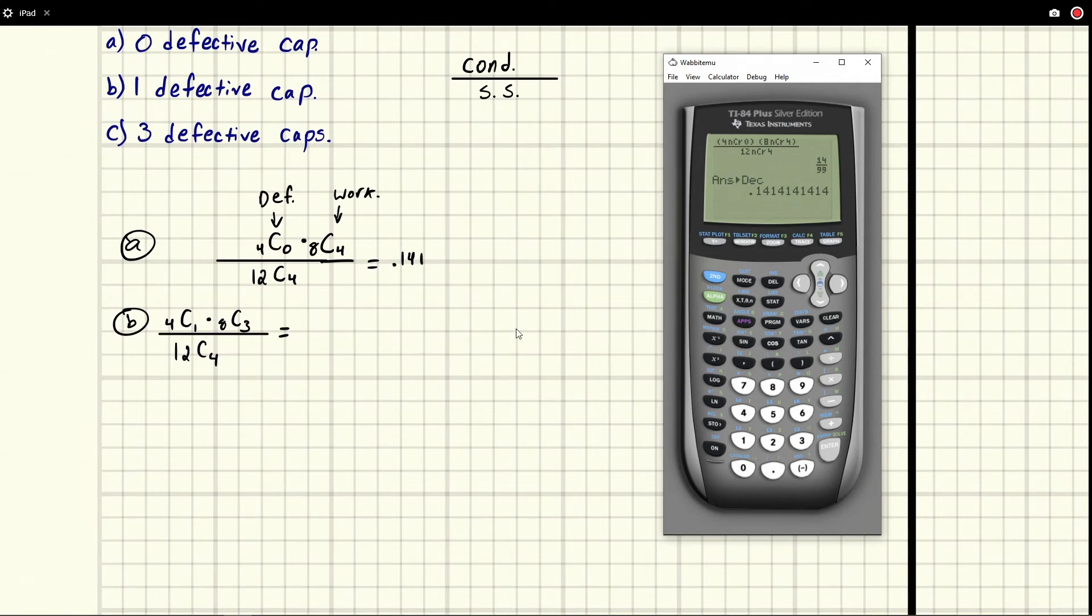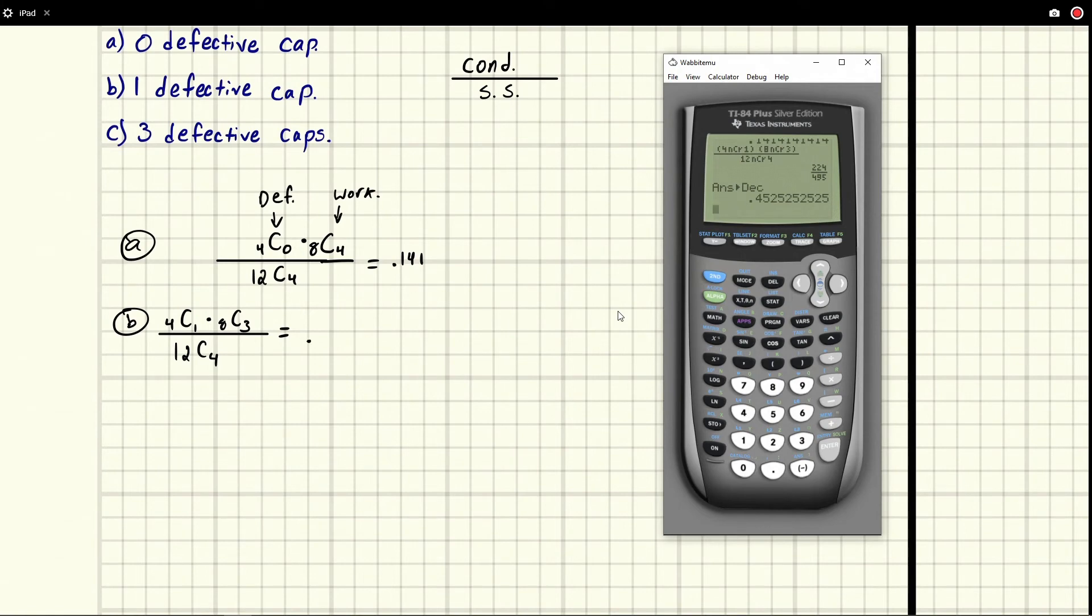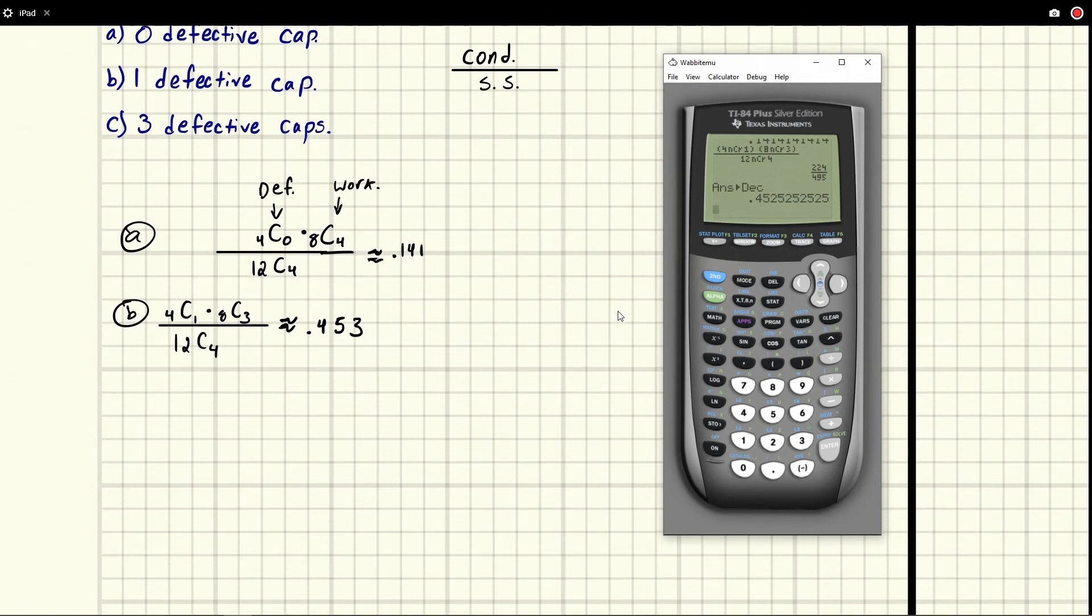And now that we've got our template, we just have one defective capacitor this time. It's going to be 4 choose 1, because we have a defective one. And then we have 8 choose, and this time we only get to pick three working ones, because we're picking four total. Three plus one is four and eight plus four is 12, which is all the capacitors. So when we do this one, well, let's see what we get. So neat thing about this calculator, you can go up and instead of retyping it, you can actually just hit enter after you've highlighted it and boom, it puts it there for you. So all we need to do is adjust the number four to be a three and the number zero to be a one. You hit enter and again, we get a fraction, don't panic, just go to a decimal. And we get 0.453.